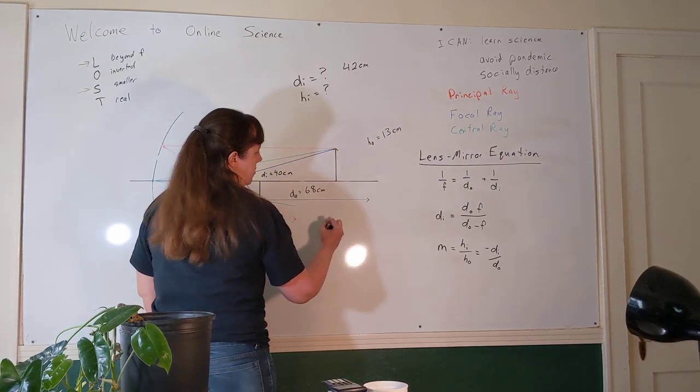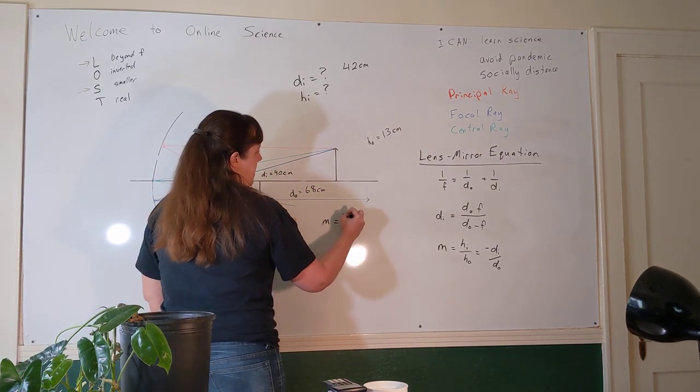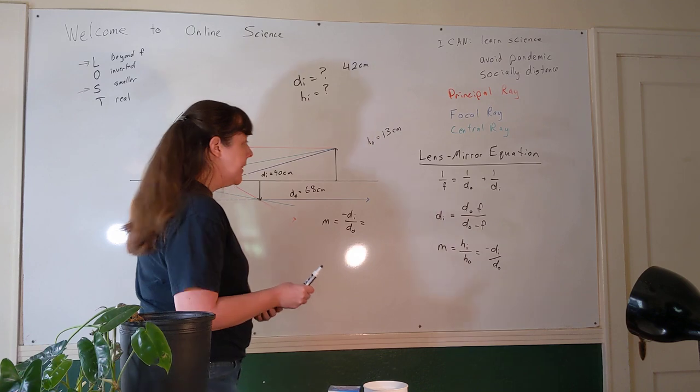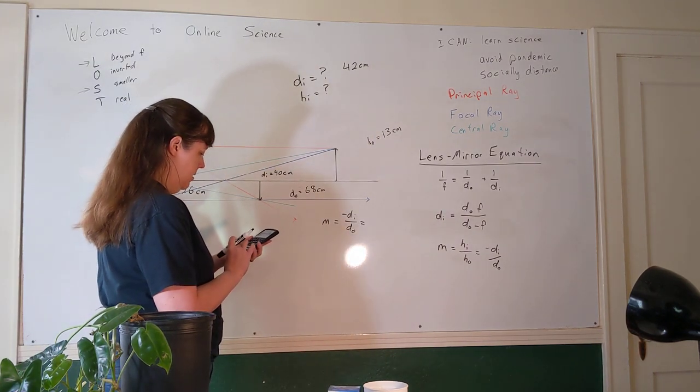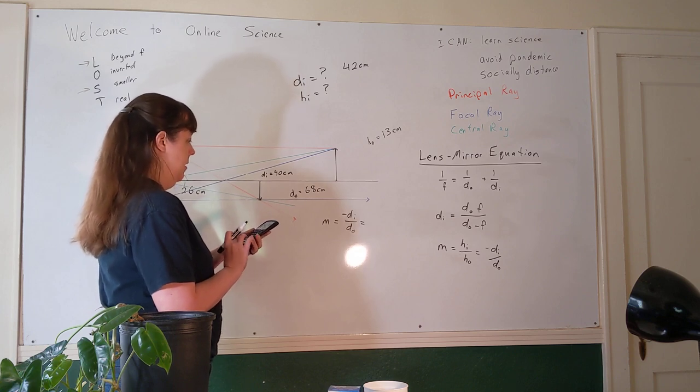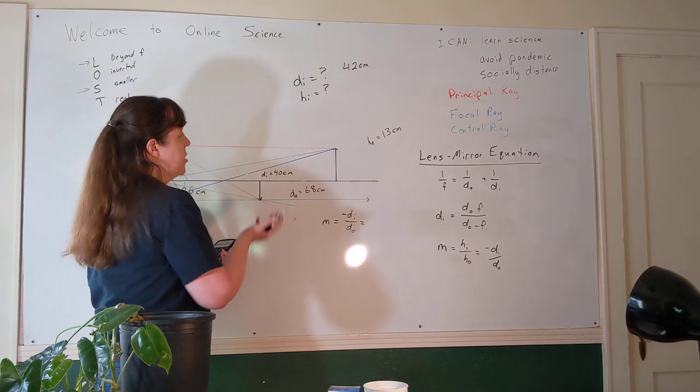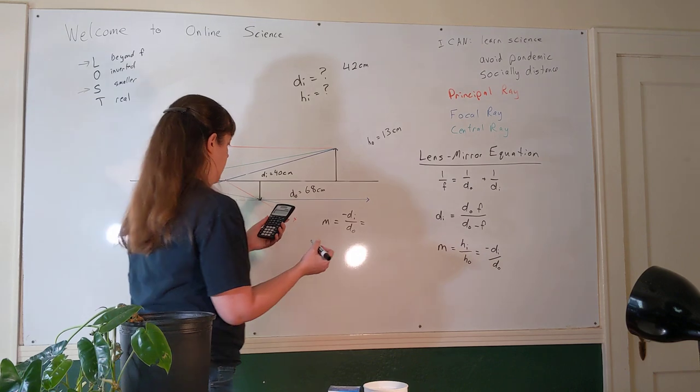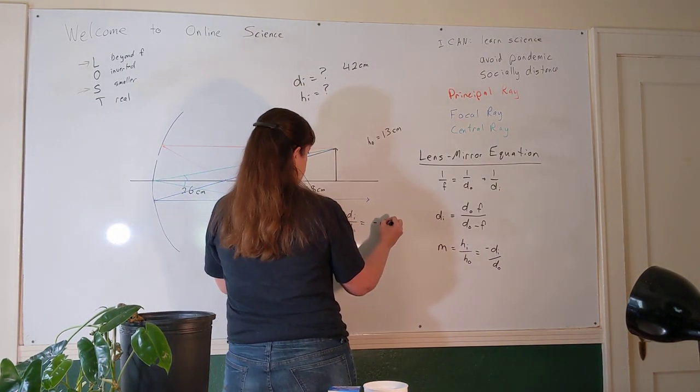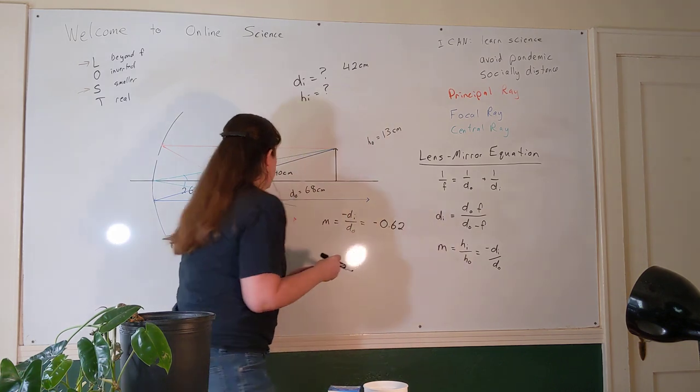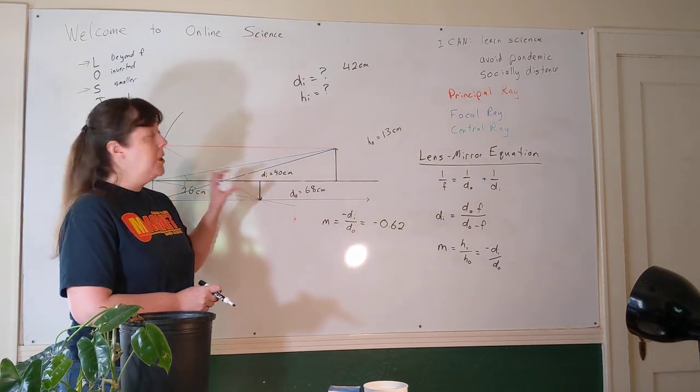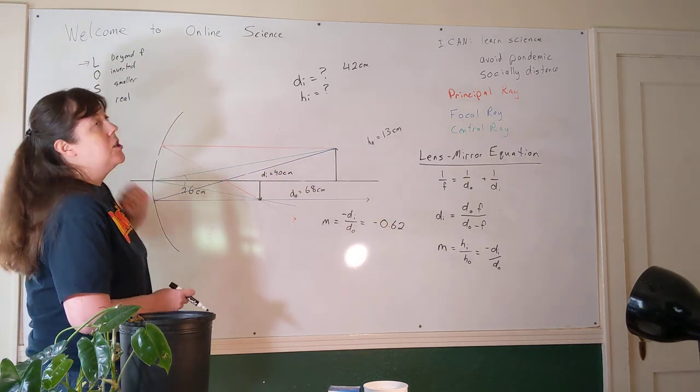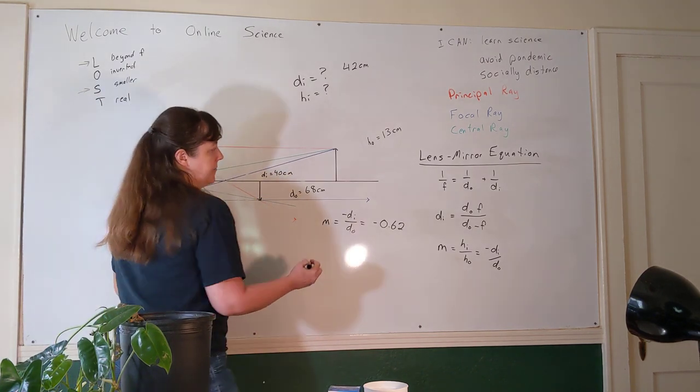So the magnification for this object is minus di over do. This magnification is going to be a negative number. I'm using the calculated image height here. I only measure the image height just to confirm that my picture is about right. I'm always going to use my calculated numbers. The magnification that I get is negative 0.62. That seems reasonable, about two-thirds or a little less. This negative magnification indicates that my image is inverted, that it's upside down. Now we can find the height of the image.